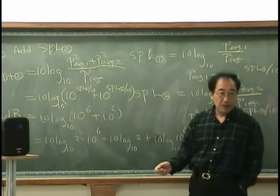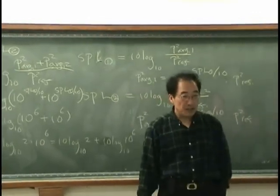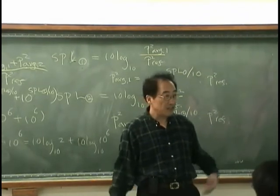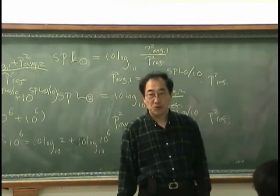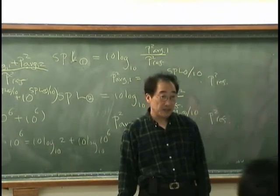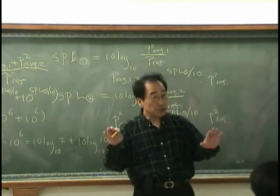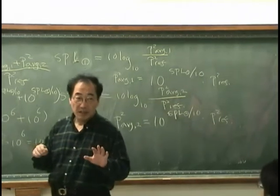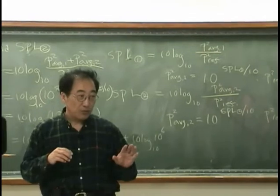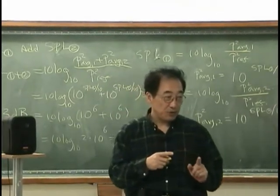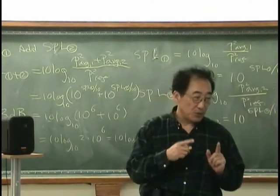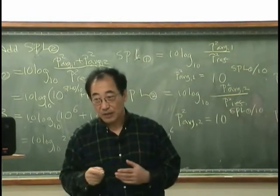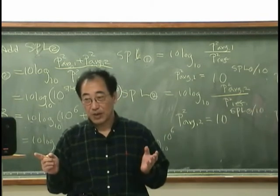For example, say I have 100 dB and I have 90 dB. Then it would be close to 100 dB. So that means when we have a noise, the first target we have to reduce is the noise that has a maximum sound pressure level. Of course, that corresponds to our common sense.